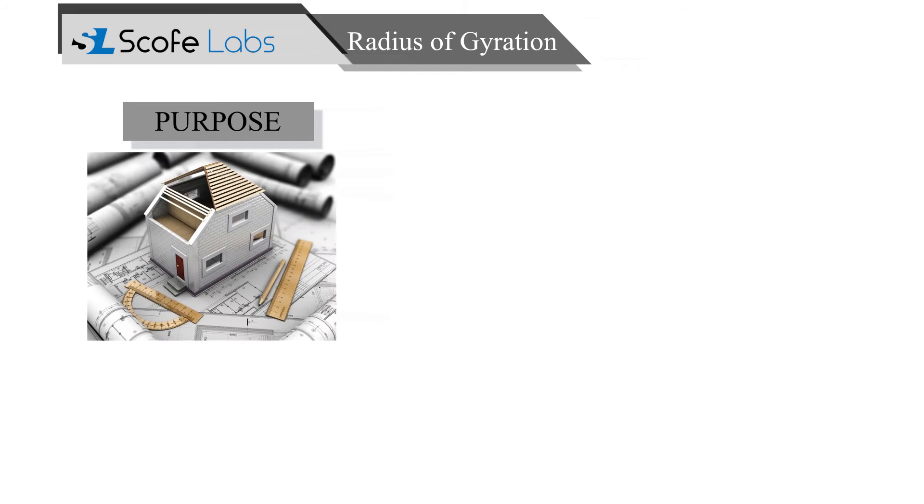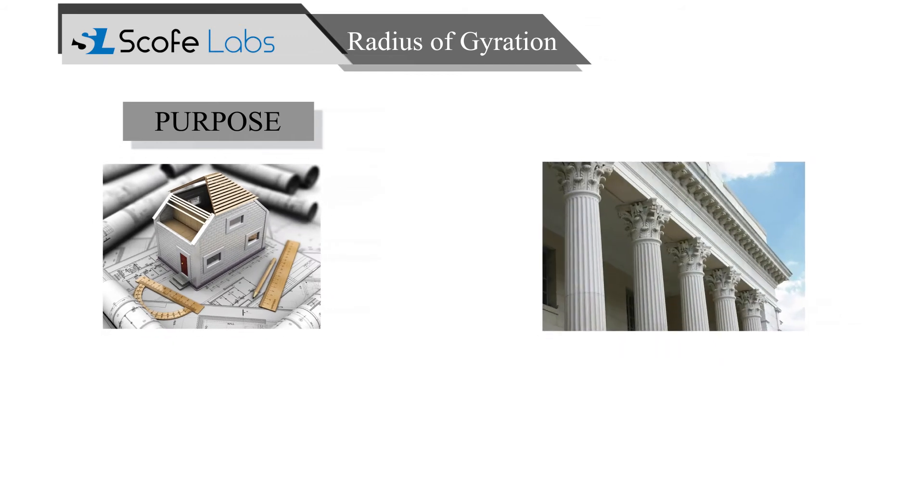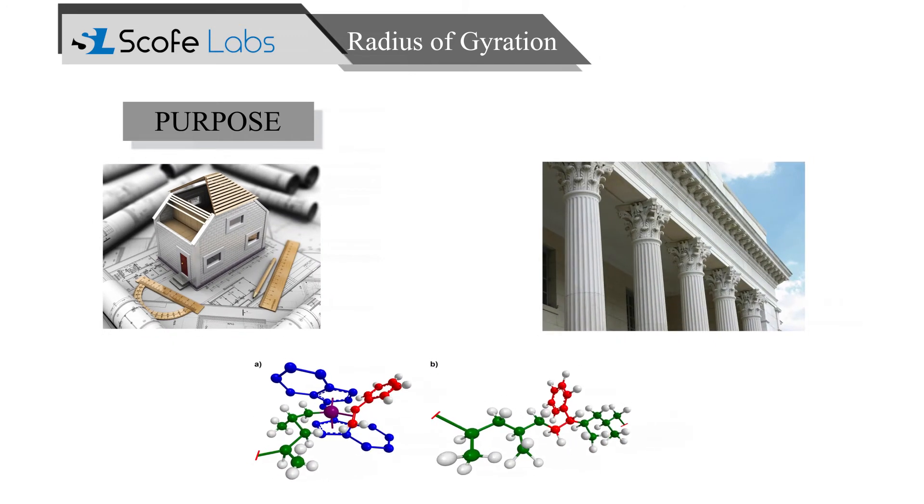The term radius of gyration is useful for structural engineering and also in polymer physics. It is useful in estimating the stiffness of a column.